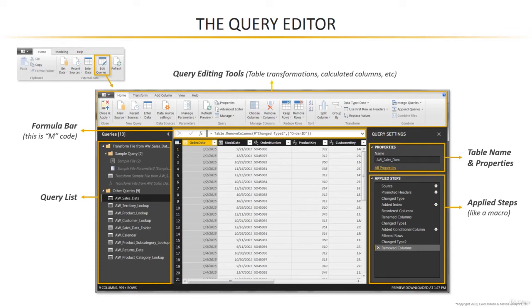Last but certainly not least, the applied steps pane in the lower right is really powerful. Every time you make a change to your data — every time you apply some sort of shaping or transformation — Power BI will record an applied step using that M code and add it to the list. Every time the connection is refreshed, Power BI runs through that same set of applied steps. This is a great way to automate things like data cleansing or ETL processes, so you don't have to run the same processes manually every time you connect to the data.